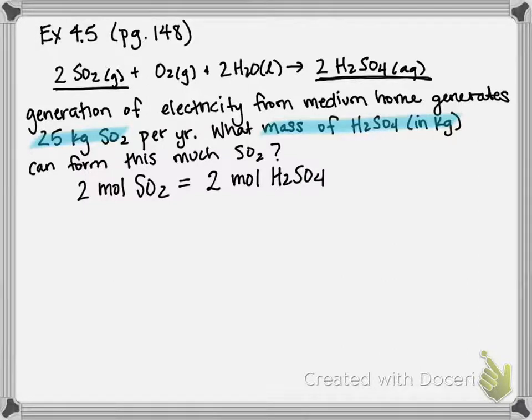So keep that in mind as we're performing this stoichiometry calculation. So we're looking for the mass of sulfuric acid, H2SO4, in kilograms produced from 25 kilograms of SO2. I'm going to move that down here so we have enough room to work. 25 kilograms SO2.